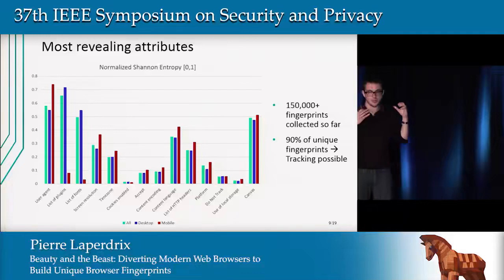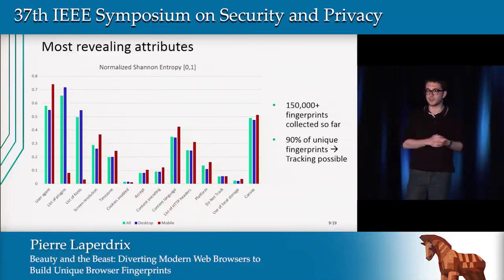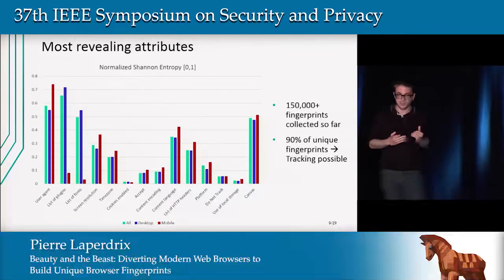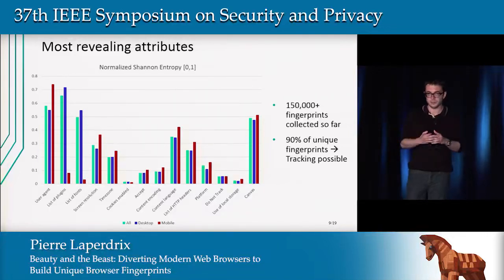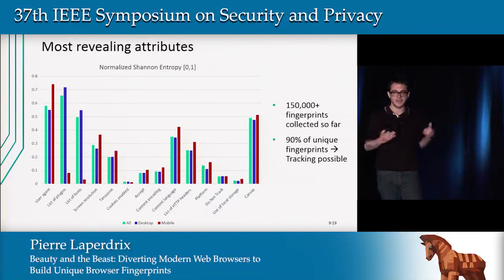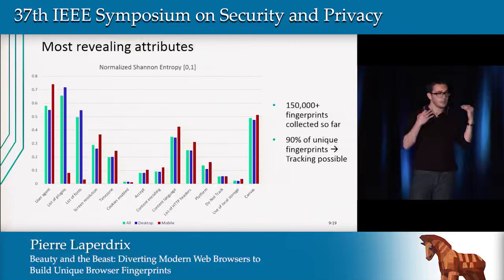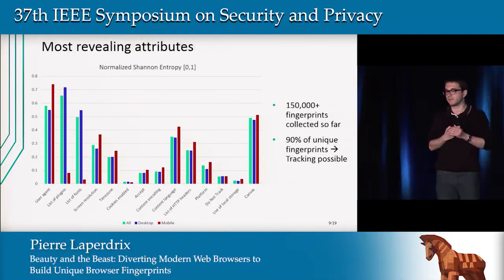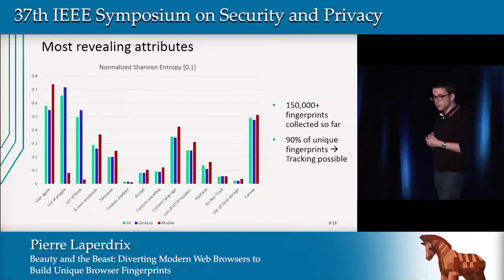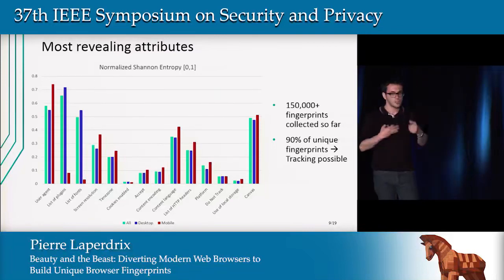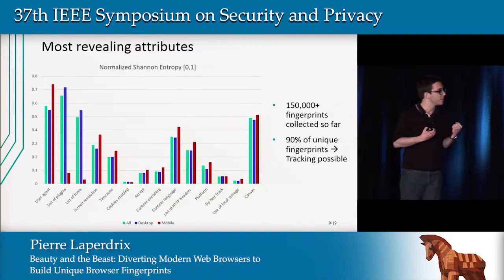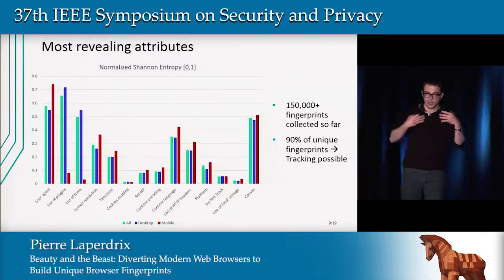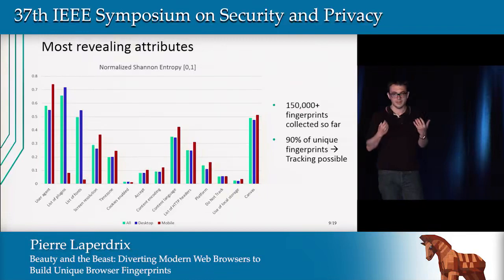Here is one of the main results of our study: the entropy for all the attributes we collect. On the x-axis we have the different attributes; on the y-axis the entropy for different categories of fingerprints — green for the full dataset, blue for desktops, and red for mobile fingerprints. We collected more than 150,000 different fingerprints, and one interesting result is that 90% of fingerprints were unique. That means tracking is possible, confirming what the Panopticlick study found six years ago: by collecting enough information, you can easily identify users on the internet.